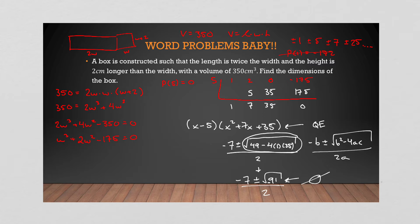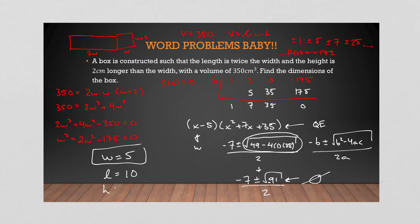That leaves us only one answer. Remember x is our w in this case, so w = 5. That's our only solution. The width of the box is 5, which means the length is twice that — 10 — and the height is 2 more than the width — 7. Just like that, you've solved all sides of the box given only the volume.